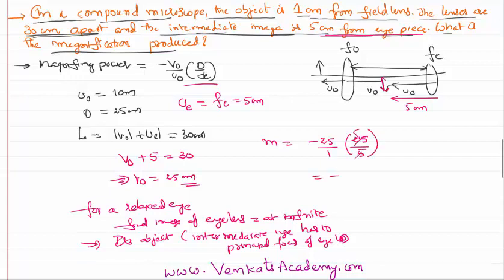So the total magnification is -125, and the minus is a symbolic way of understanding that the final image is an inverted image. Thank you for watching, keep coming back for more video lessons.